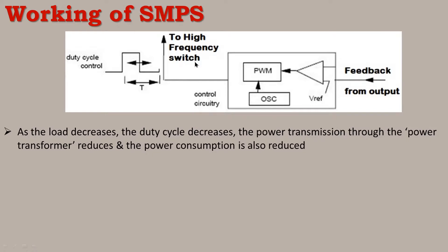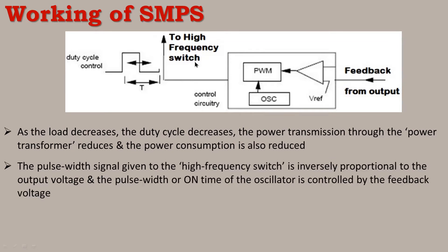In this way, the control circuit adjusts the switching circuit's duty cycle to regulate the output. When the output voltage is low, the on-time increases and the duty cycle increases beyond 50%. This PWM circuit controls the MOSFET switching circuit to maintain a constant, regulated output voltage.